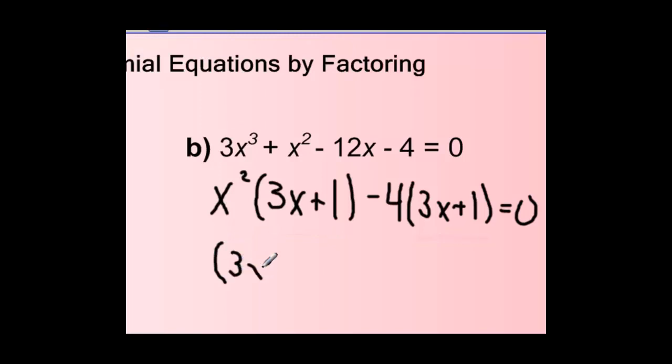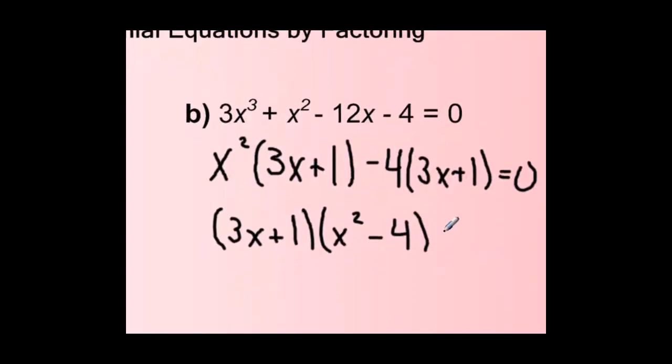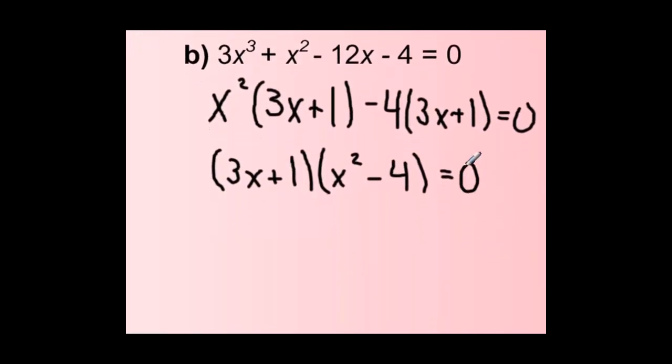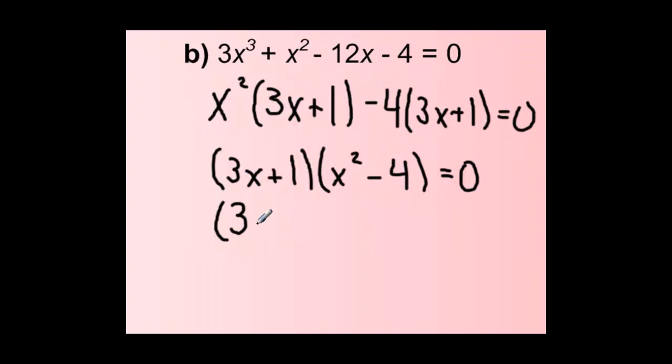That gives me my first factor, factor of 3x plus 1. And then my second factor is x squared minus 4. And I should again recognize that I can factor that using difference of squares. So, the factor of x plus 2, factor of x minus 2, that equals 0.